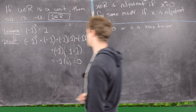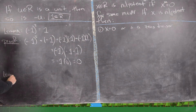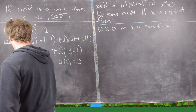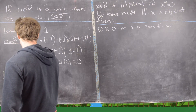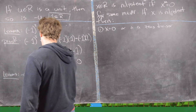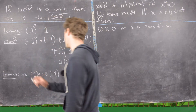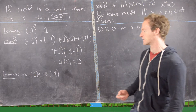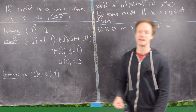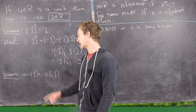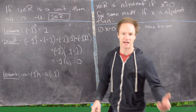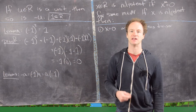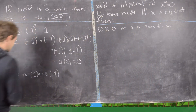The next lemma to prove is that negative A is the same thing as negative 1 times A, which is the same as A times negative 1. By negative A we mean the additive inverse of A; by negative 1 times A we mean the product where negative 1 is the additive inverse of the multiplicative identity. The third expression is just multiplication in the other order.